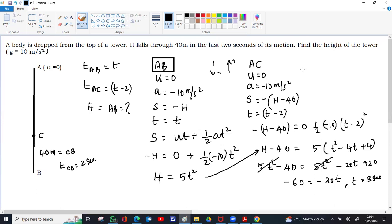Now we will substitute the value of H. H is 5 times t². So t is 3, so 5 into 9 is 45 meters is the height of the tower.